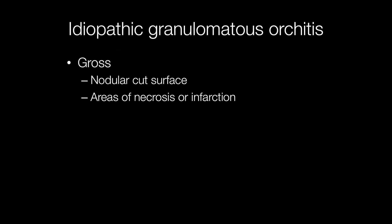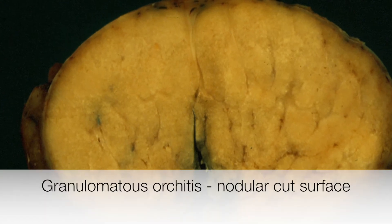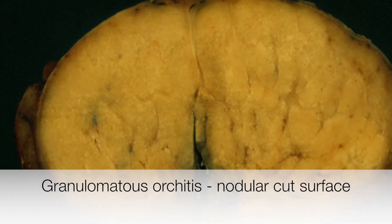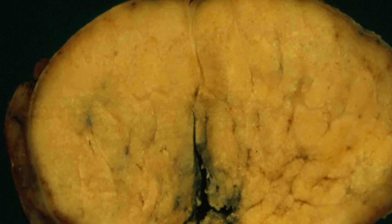The cut surface of a testis affected by granulomatous orchitis usually has a nodular appearance and there may be areas of necrosis or infarction. This testis has been bisected to reveal a rather nodular cut surface, and this is the typical appearance of granulomatous orchitis.